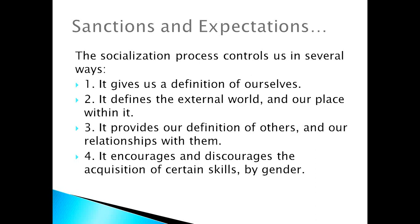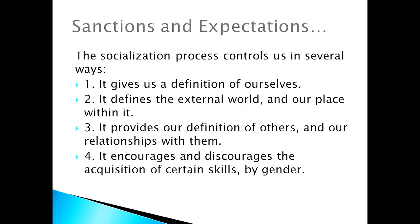The socialization process controls us in several ways. First, it gives us a definition of ourselves. Second, it defines the external world and our place within it. Third, it provides our definition of others and our relationship with them. Fourth, it encourages and discourages acquisition of certain skills based on gender. Be familiar with these four ways the socialization process controls us — there's likely an exam question on this.